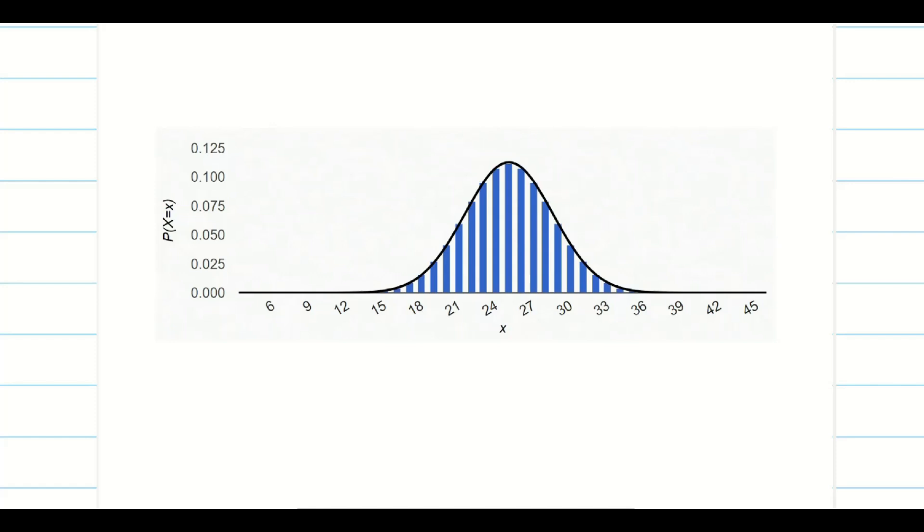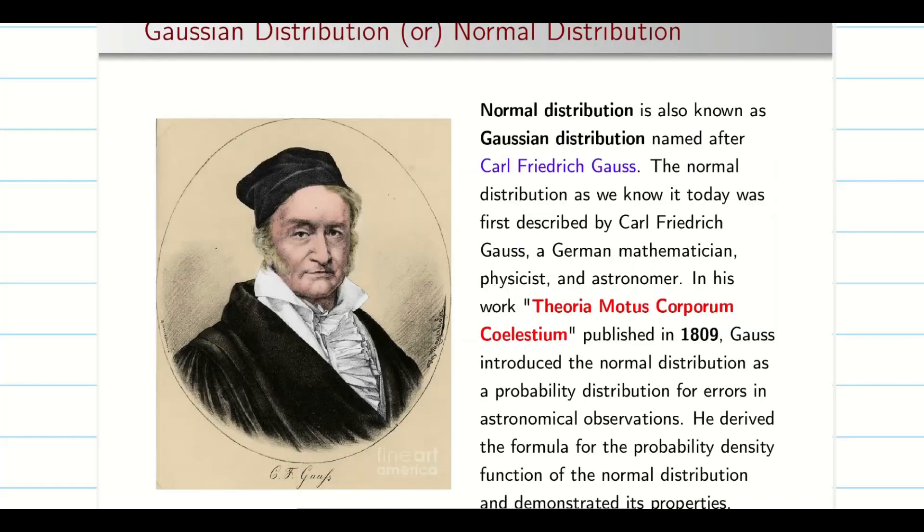And in the later, in 18th century, the great mathematician Gauss have given the clear idea about what is Gaussian distribution and the formulation etc. So it was called as either Gaussian distribution and normal distribution.